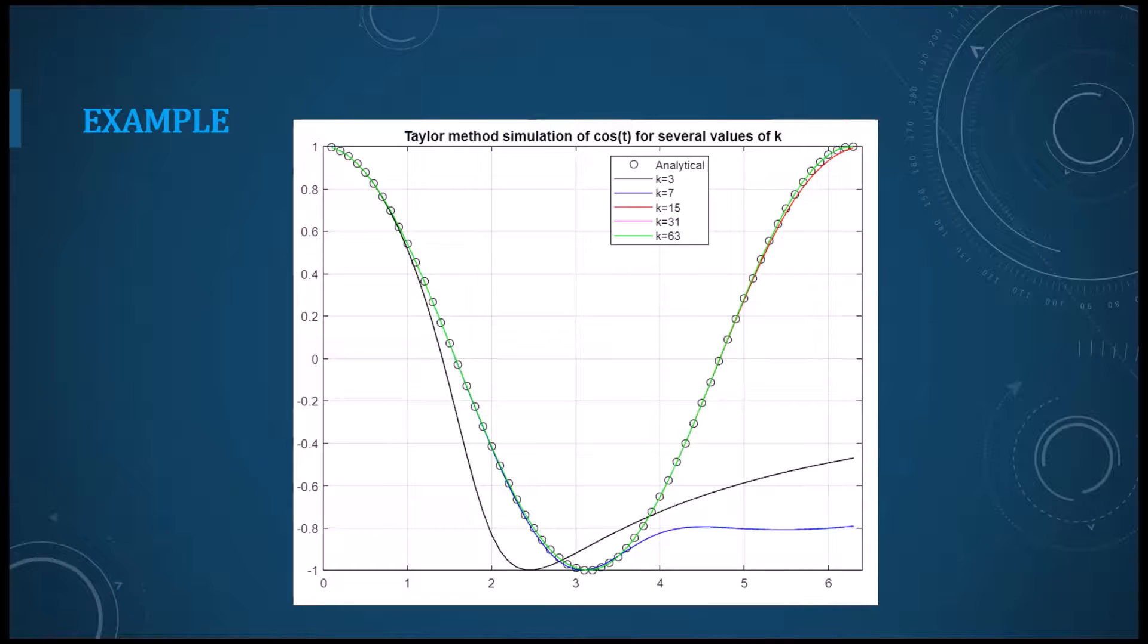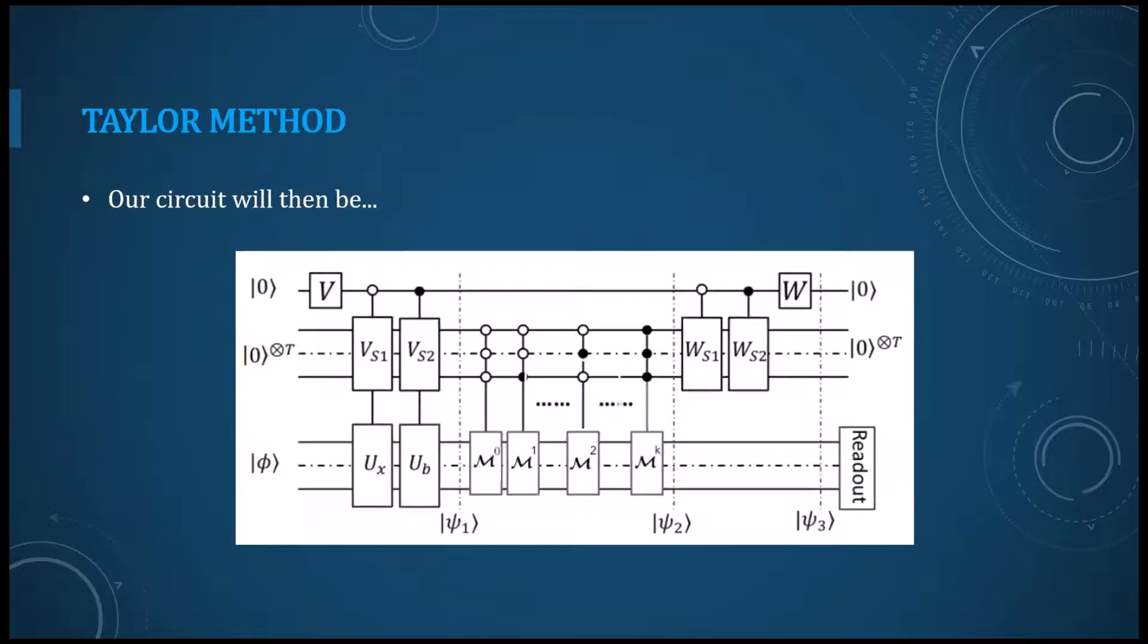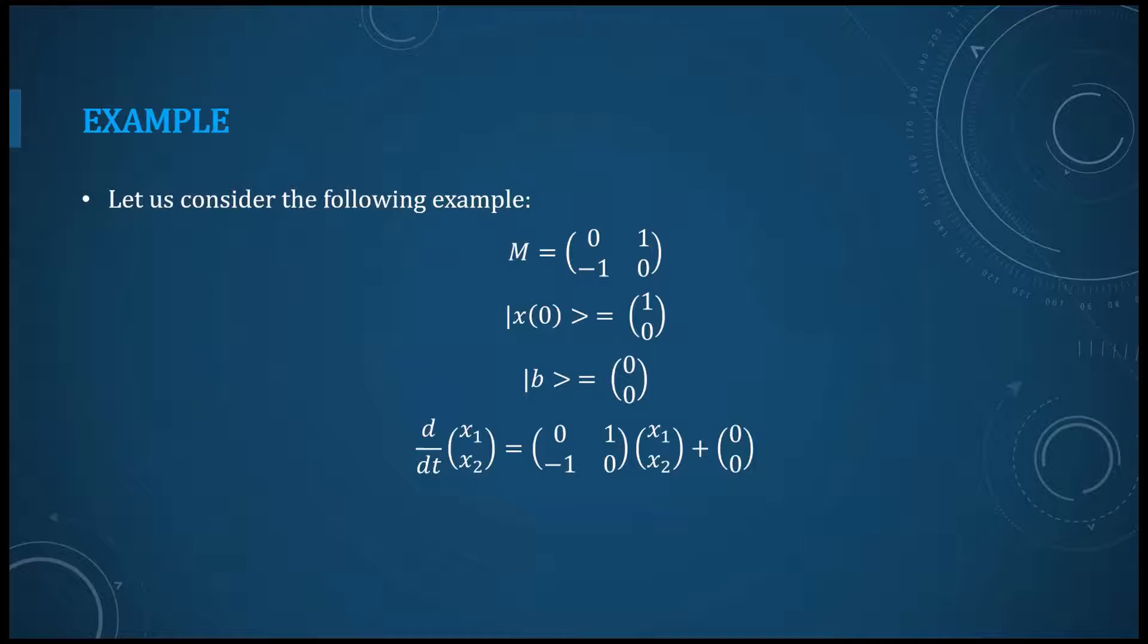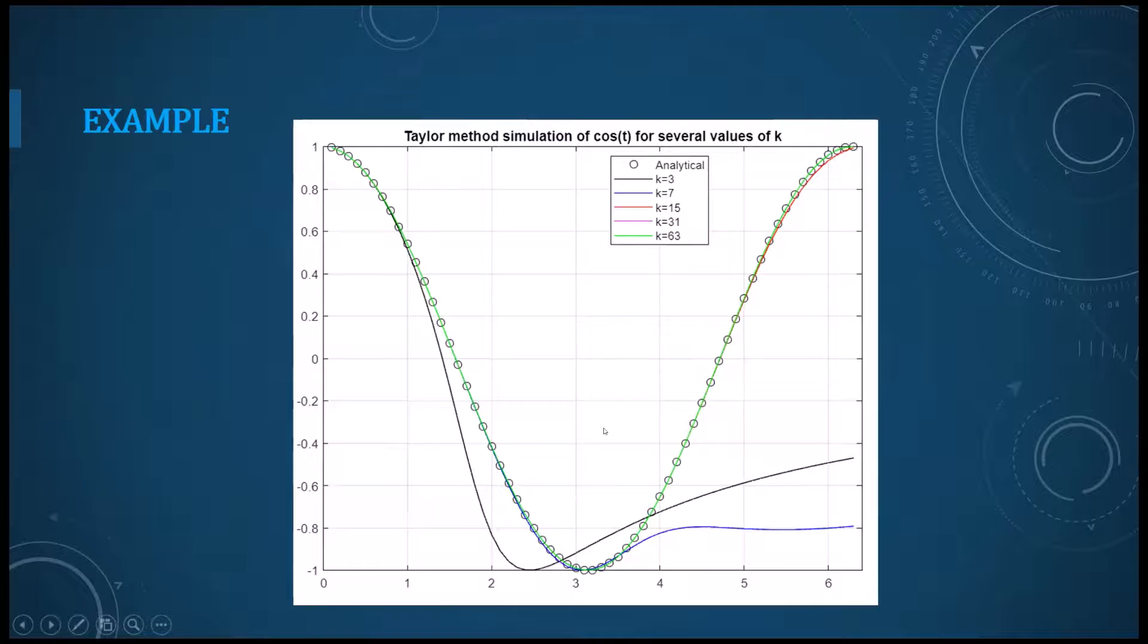Basically, what I did was to change the value of k and then see how it changes also our solution x of t, because as we saw, our solution x of t depends on k. If we increase the value of k, we shall see that our solution gets each time more accurate.